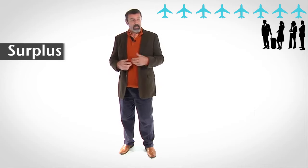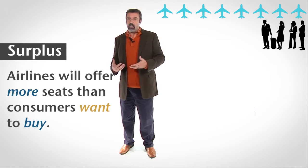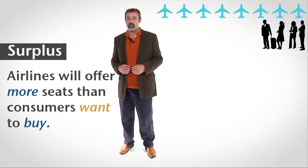Imagine that the price of airline tickets is very high. With a high price, airlines will want to offer many flights, but consumers will not want to buy many seats. We have what is called a surplus. Airlines will offer more seats than consumers want to buy.